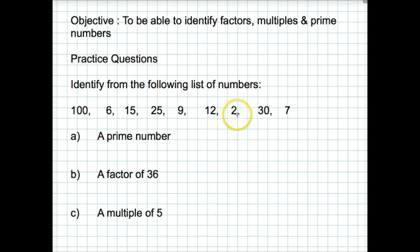2 can be divided by only itself and 1, so 2 is a prime number. 30 is not, it can be divided by 5 and 10, etc. 7 can only be divided by itself and 1. So the prime numbers there are 2 or 7.